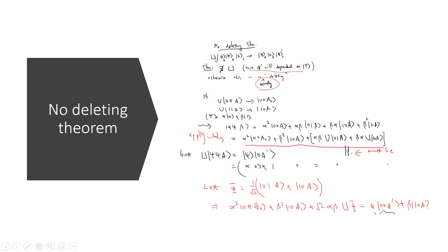For actual deleting, a' cannot contain the information of ψ — at least you cannot recover all of ψ from a'. The proof: by definition, U|0⟩|0⟩|a⟩ = |0⟩|0⟩|a₀⟩ and U|1⟩|1⟩|a⟩ = |1⟩|0⟩|a₁⟩. Let |ψ⟩ = α|0⟩ + β|1⟩. Using linearity, U|ψ⟩|ψ⟩|a⟩ expands to α²|00⟩|a⟩ + αβ|01⟩|a⟩ + βα|10⟩|a⟩ + β²|11⟩|a⟩, and applying U gives α²|00⟩|a₀⟩ + β²|10⟩|a₁⟩ + αβ·U|01⟩|a⟩ + βα·U|10⟩|a⟩.